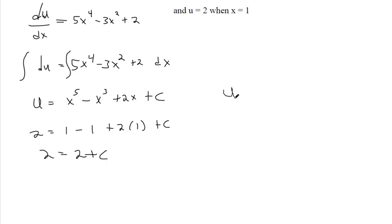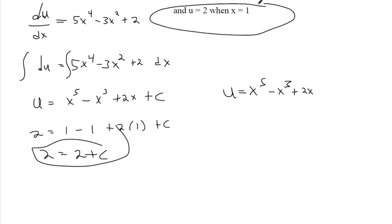So, now that we know what the arbitrary constant is for this particular piece of information, this is our solution. There's no arbitrary constant because we just solved for it with this information. We found out that c equals 0. So, this is our solution.